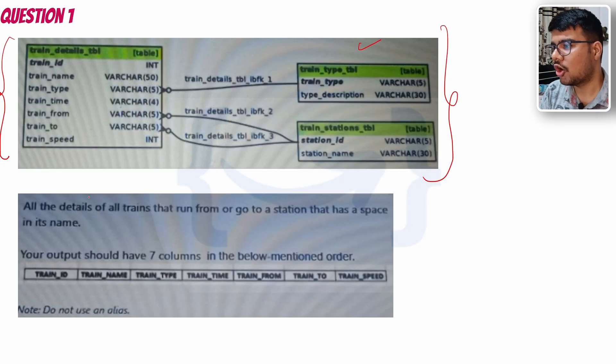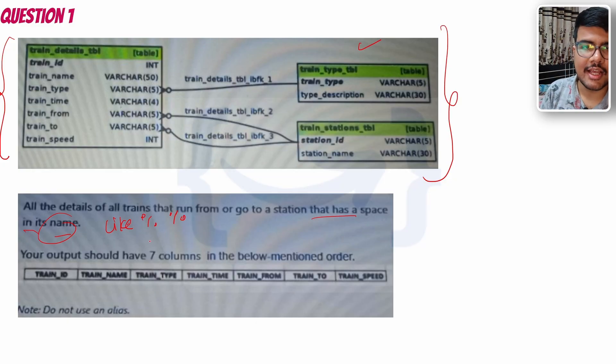All the details of trains that run from or go to a station that has space in its name. When we hear the term 'space in its name', simply in my mind, the LIKE keyword will come and something related to name. We will use this modulus operator, and in between the space will work fine because we need to find the particular name.